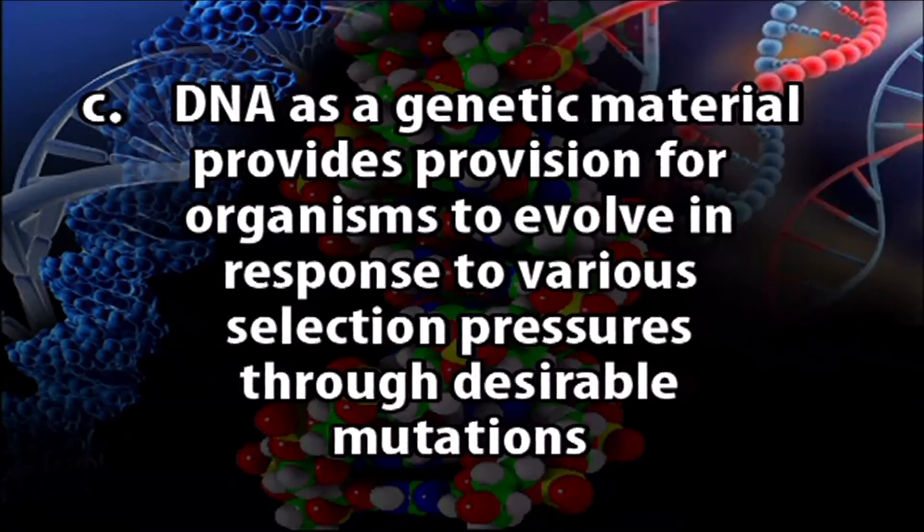In conclusion, DNA fulfills all the important criteria to act as a perfect genetic material. There is enough evidence, both direct and indirect, to prove that DNA is indeed the genetic material, as demonstrated by the three classical experiments discussed. DNA as a genetic material provides provision for organisms to evolve in response to various selection pressures. That was all for this topic — DNA as the genetic material. We will cover other aspects of DNA in the next lecture.